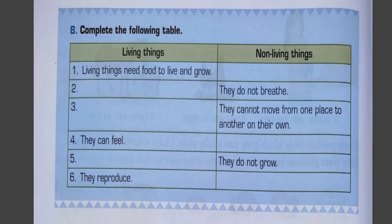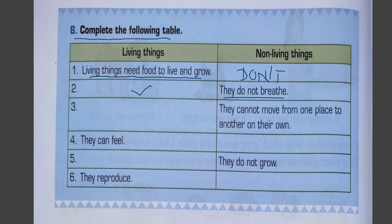Now let us complete the following comparison table. Living things need food to live and grow, whereas non-living things do not need food. Non-living things do not breathe, whereas living things breathe. Non-living things cannot move from one place to another on their own. Living things can feel, whereas non-living things do not feel.